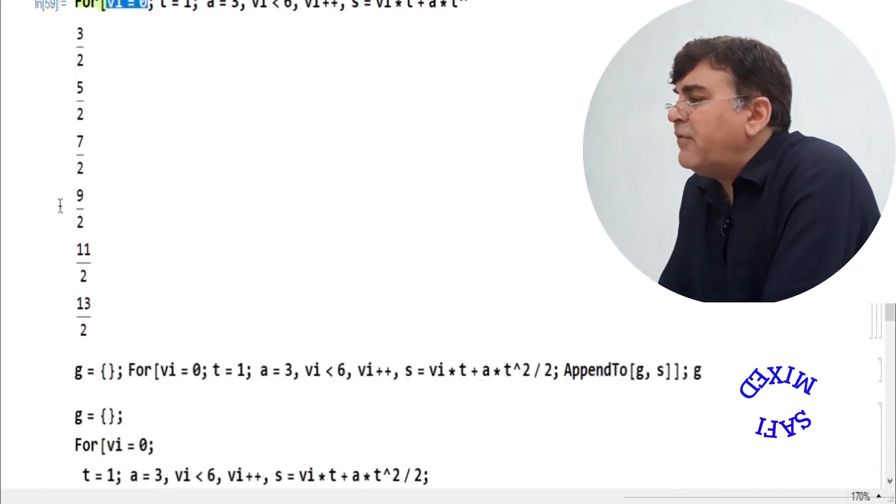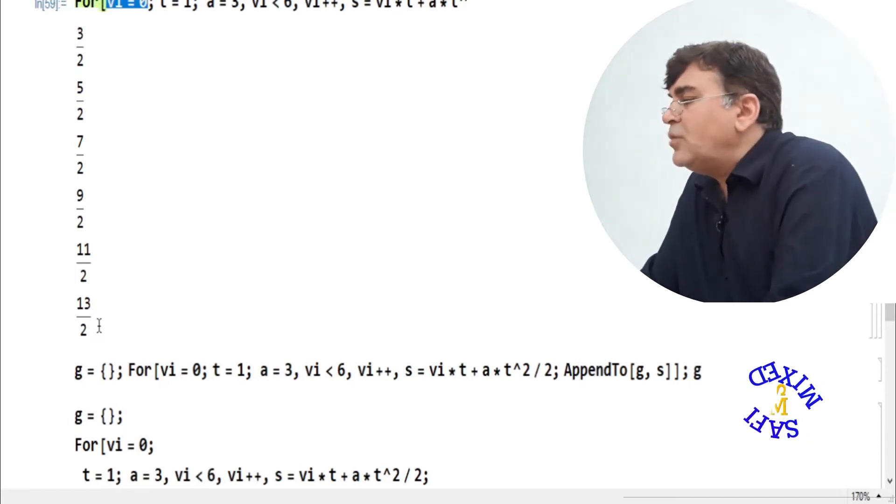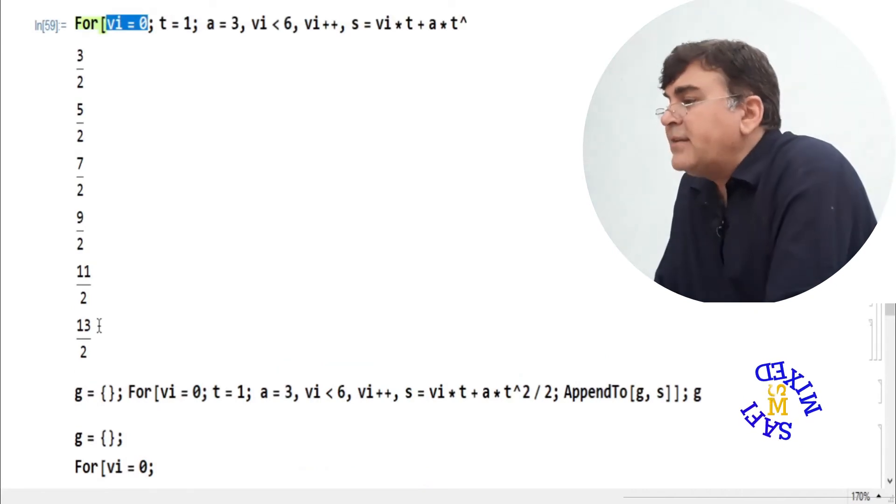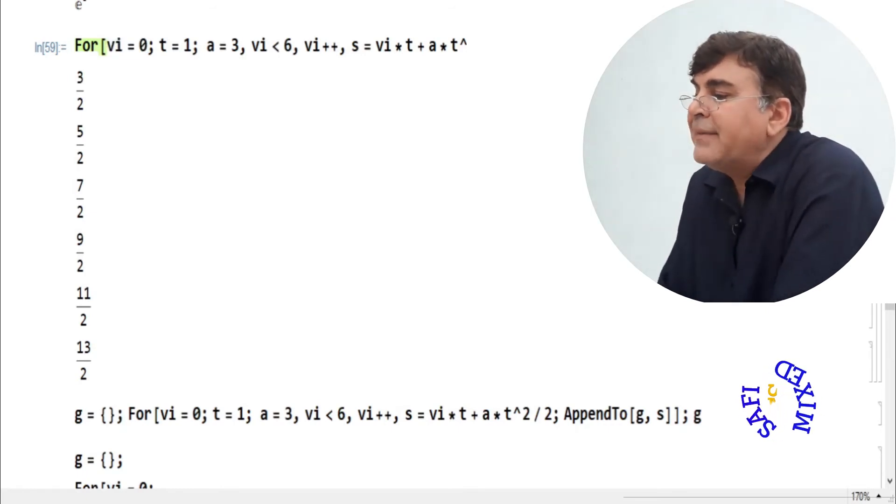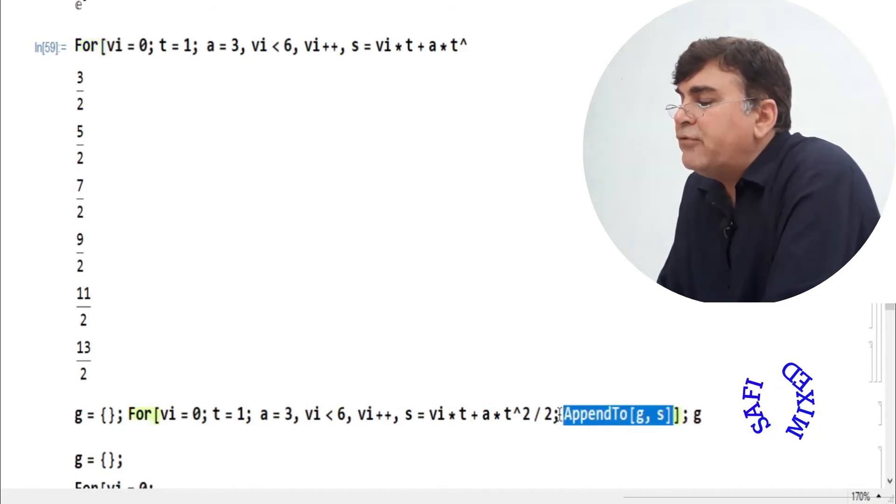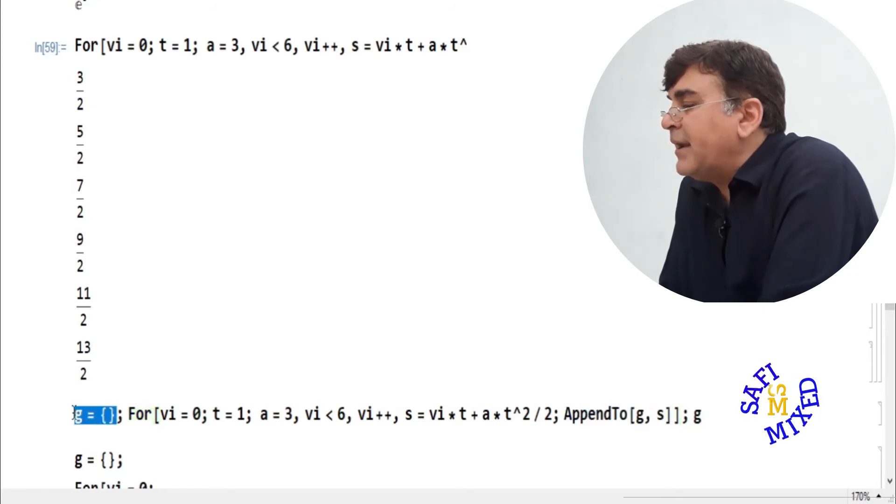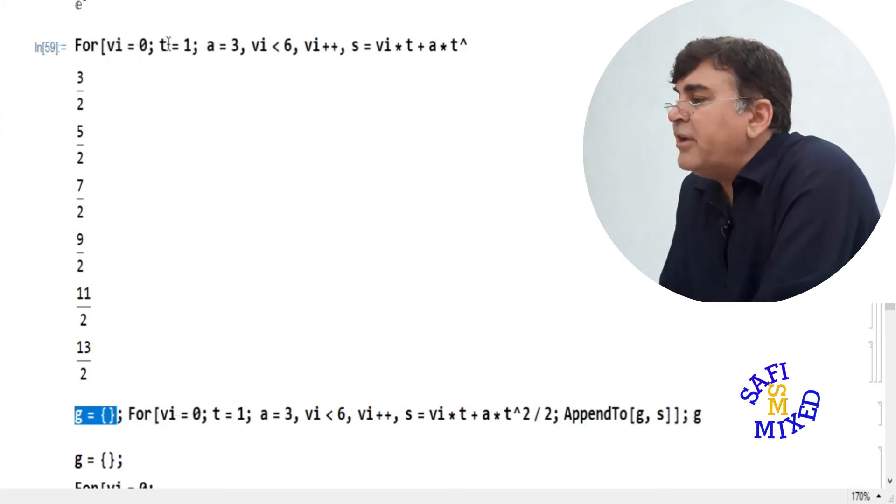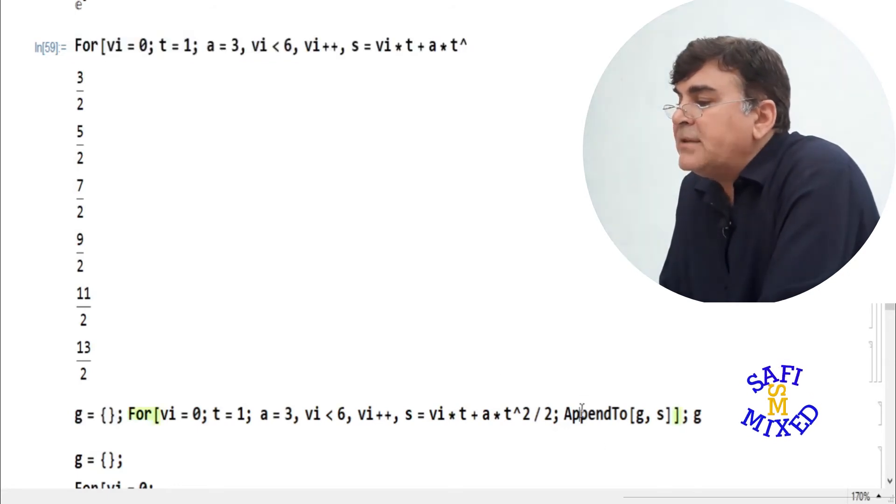Now this form of the values obviously looks a little awkward, and I want to put these values into a list. So for that I have to make a little change in the last part of the equation. Instead of using the print command, I want to use the append to command. And before that, I define a blank list with G. That is, G is a list with no element inside it, it's a blank list. Then I construct the for loop with the same values as given over here.